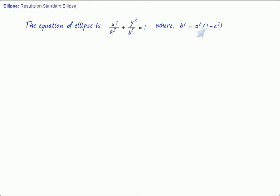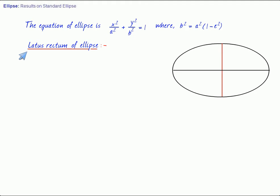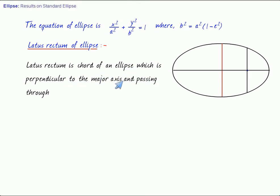Now, in this session, we will derive more fundamental results on ellipse. For instance, the latus rectum is something very important. Latus rectum is chord of an ellipse which is perpendicular to the major axis and passing through the focus. So, this is the focus, this is the center of the ellipse, these are the vertices.